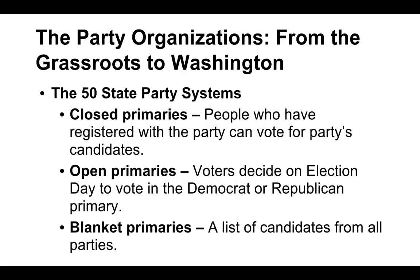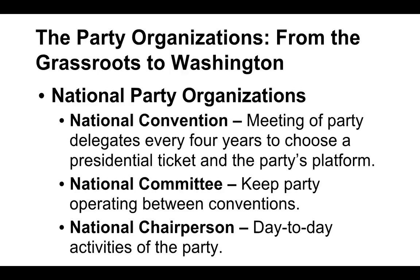National party organization — how is a national party organized, Republican or Democratic? Those are the two major parties, but most other minor third parties also have similar structure. A national convention is a meeting of party delegates every four years to choose a presidential ticket and to agree upon the party's platform. Every four years in the summer, they meet and decide who their presidential ticket is going to be — who's running for president — and then they decide on the party's platform: what do we stand for.